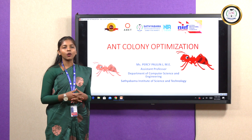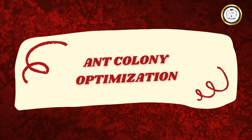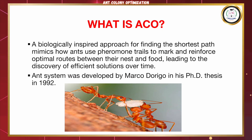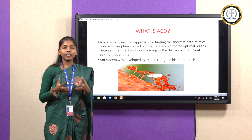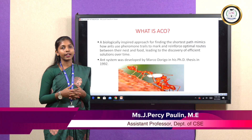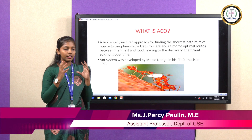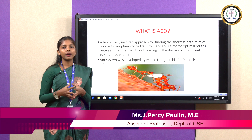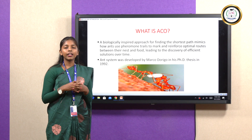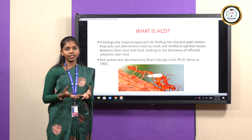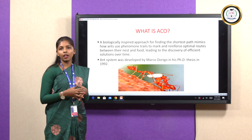Today we are going to learn about ant colony optimization. So what is ACO? That is ant colony optimization. We all have seen ants in our day-to-day lives, and we know how they function, the way they hunt for food. This ant colony optimization is nothing but mimicking real life ants into artificial ants to give the optimal output.